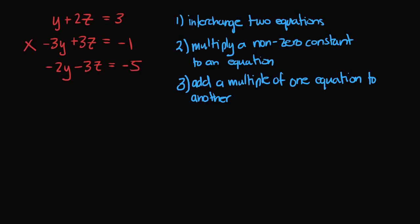Now that we know what row echelon form is and we've learned about equivalent systems, we can use certain rules to manipulate one system that may not be in row echelon form into an equivalent system that is. When something is in row echelon form, we can use back substitution to solve for the unknown variables. To do this, we must abide by certain rules called elementary row operations.